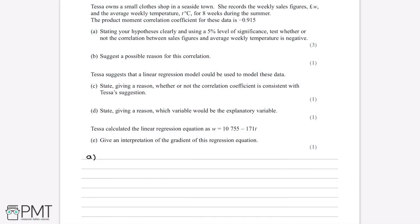Tessa owns a small clothes shop in a seaside town. She records the weekly sales figures W pounds and the average weekly temperature T degrees C for eight weeks during the summer. The product moment correlation coefficient for this data is minus 0.915. Part A asks, stating your hypotheses clearly and using a 5% level of significance, test whether or not the correlation between sales figures and average weekly temperature is negative.